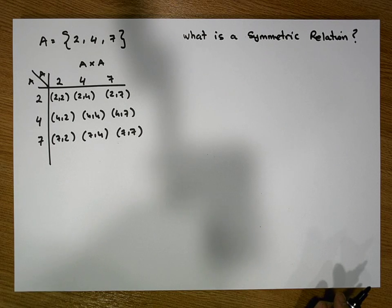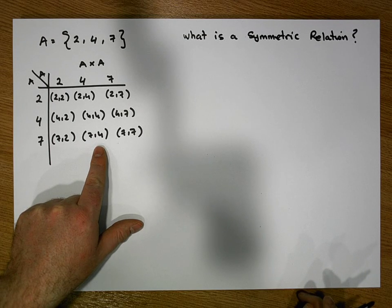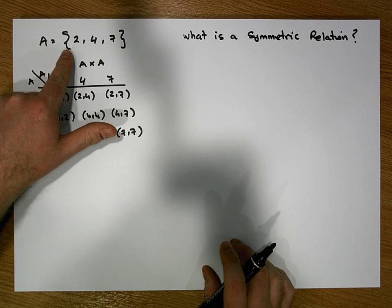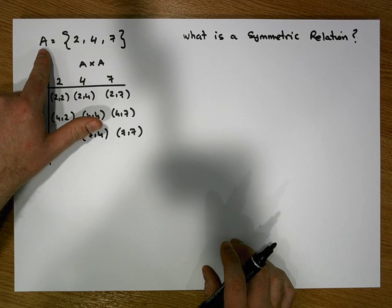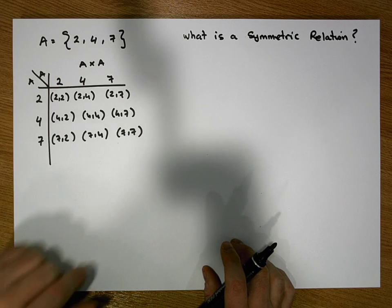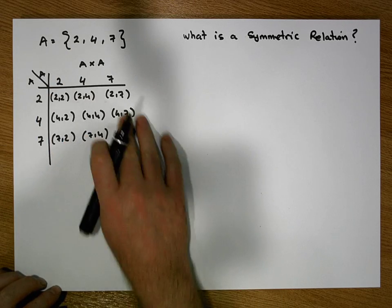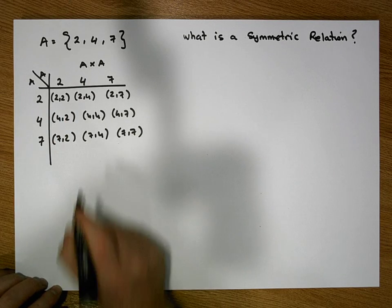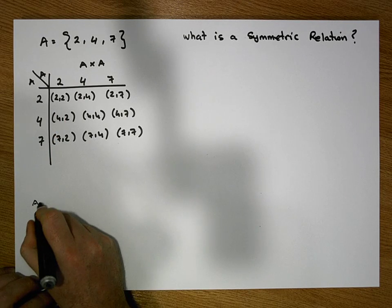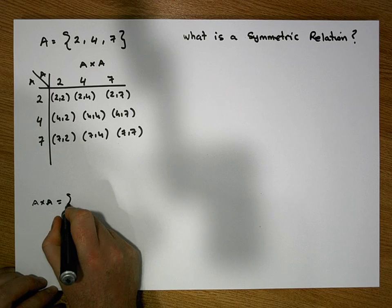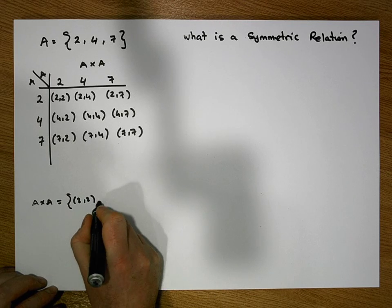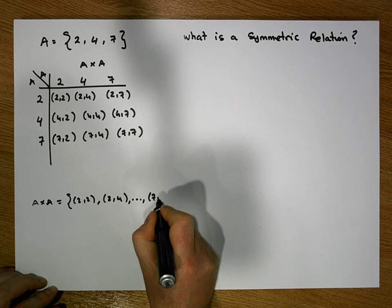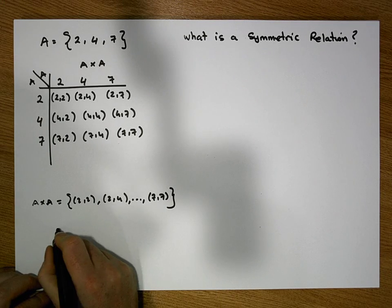Let's keep in mind that a relation is simply a subset of a cross product. In this particular situation, I have the set A which contains the values 2, 4, and 7. What I've constructed is all the possible ordered pairs for the set A cross A. We take all of these ordered pairs and list them inside a set, and that gives us what's known as the cross product.